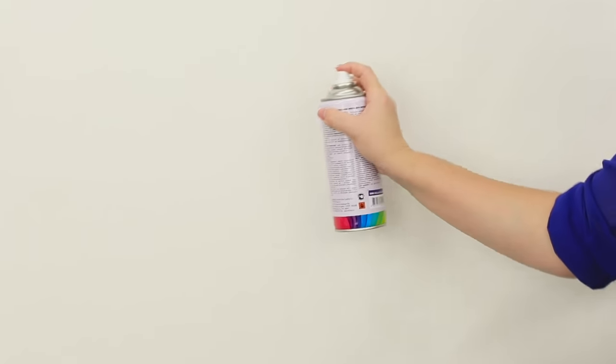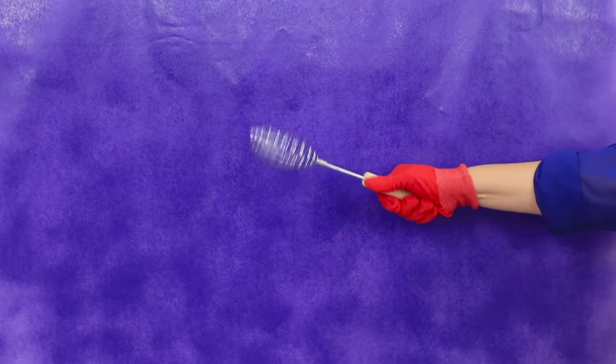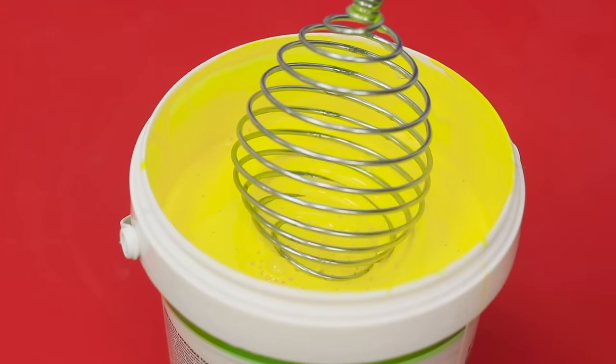And now, we get some spray paint and color the wall purple! Next, take a regular whisk and dip it in a bucket of yellow paint.